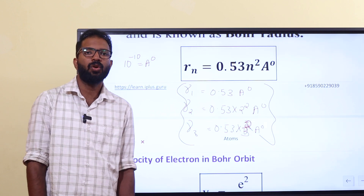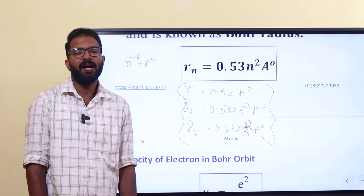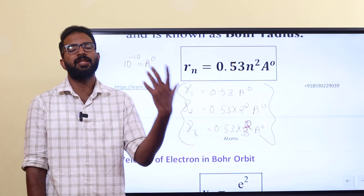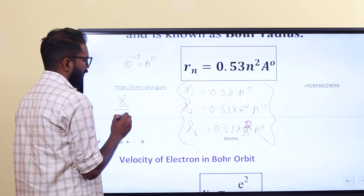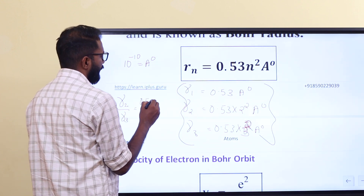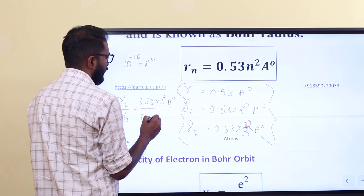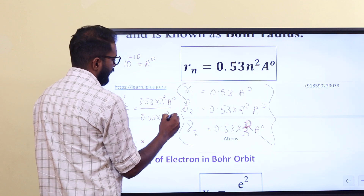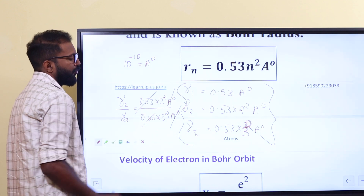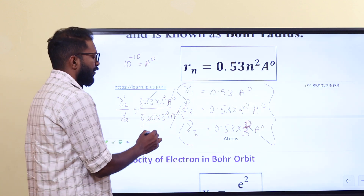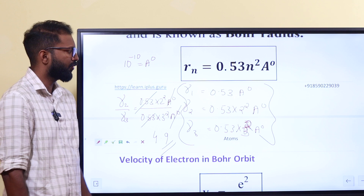First orbit, second orbit, third orbit — where is the radius? Let's look at the ratio of the 2nd and 3rd orbit. R2 divided by R3 equals 0.53 × 2² Angstroms divided by 0.53 × 3² Angstroms. The Angstroms cancel, and the ratio equals 2² divided by 3², which is 4 over 9.